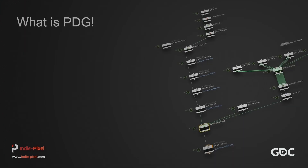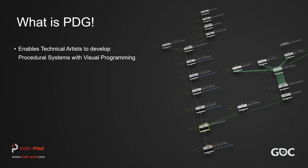What I really like to think of PDG as is giving technical artists the ability to visually program an application. Your current HDAs, when you're creating those, you're actually creating more of like a method or a class, if you're familiar with programming concepts. They do their one little thing — they take in some input from the user and give you some output, and that's it.